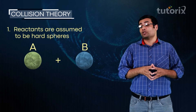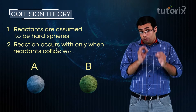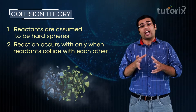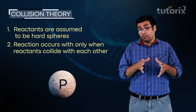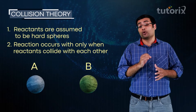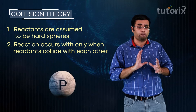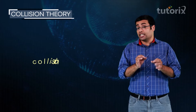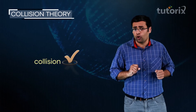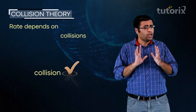The second point of collision theory tells us that for a reaction to occur between A and B, A and B must come close to each other and collide or crash into each other, leading to the formation of product. These two rocks A and B have to come close and collide with each other in order to form product P. Collision is necessary — without collision, product P will not form. So rate somehow depends upon these collisions.